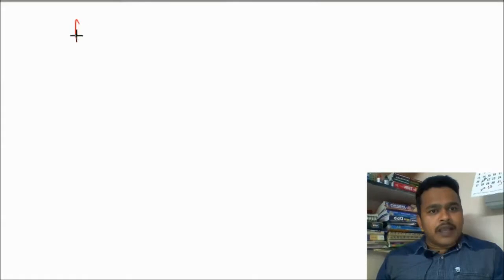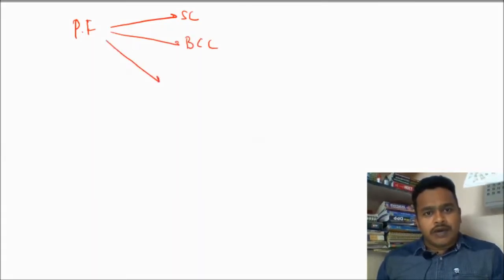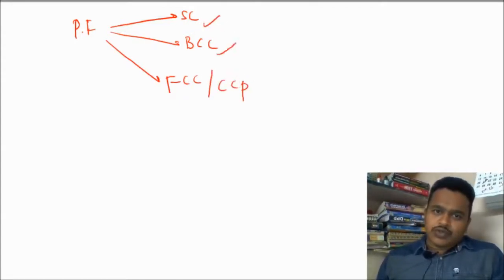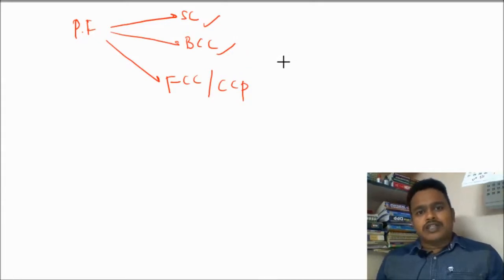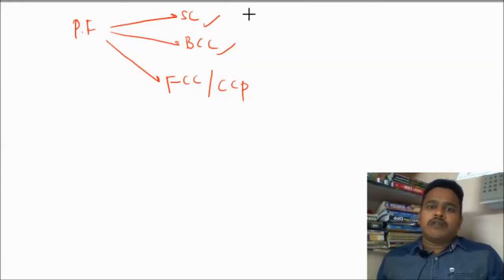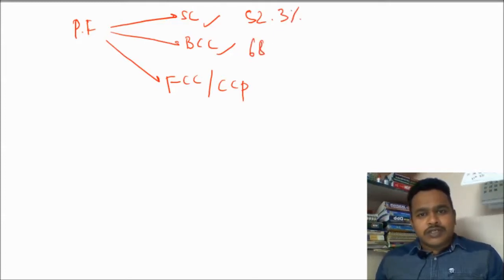Packing fraction — we studied that for simple cubic, for BCC, for FCC, otherwise also called as CCP. These two we discussed in the last videos, you can watch the previous videos. How much we got? Packing fraction is 52.3% for simple cubic, and 68% for BCC.